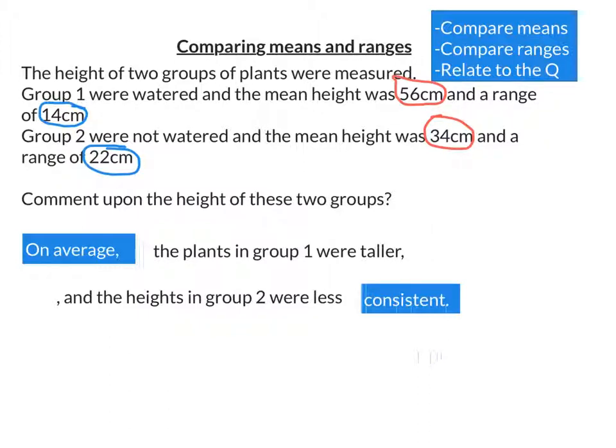So saying that in one go, on average, the plants in group one were taller and the heights in group two were less consistent. So let's look at